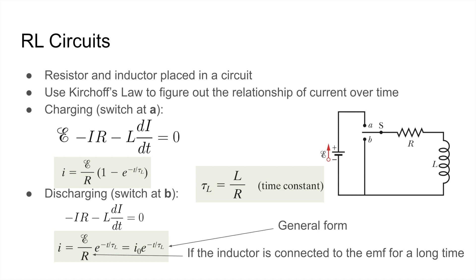we go up an EMF of E, then we go down negative IR, and then we go down again negative LDI over DT. And since by Kirchhoff's law, this has to be zero, we just get E minus IR minus LDI over DT is equal to zero. Now we can do some calculus and solve, and we get I is equal to E over R times one minus E to the negative T over the time constant, where the time constant is L over R.